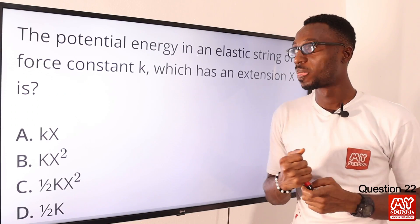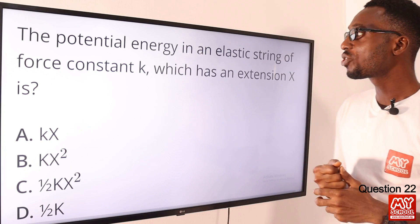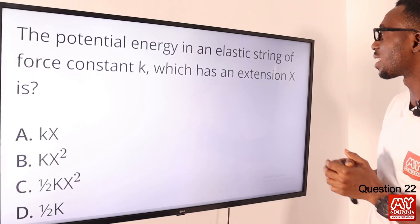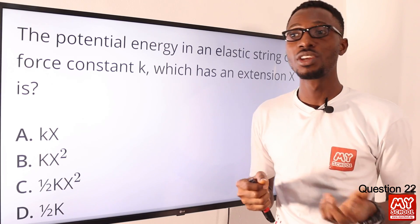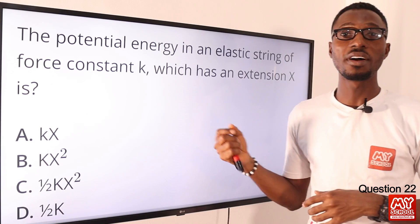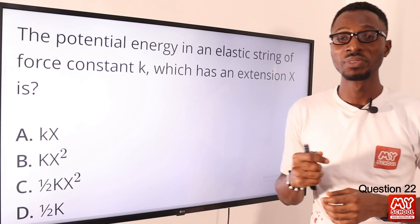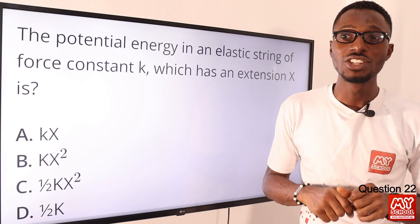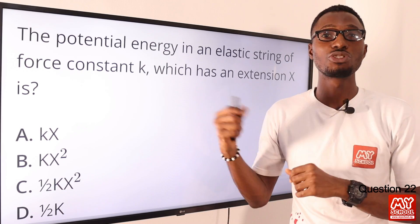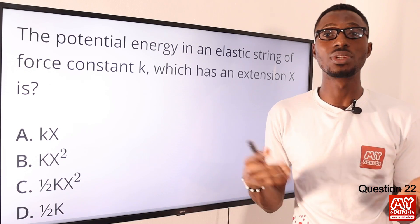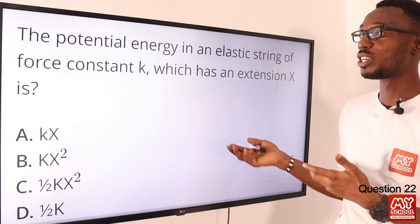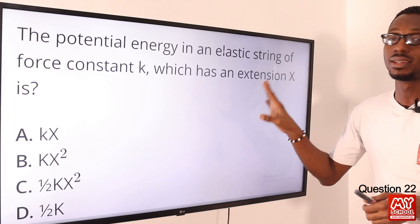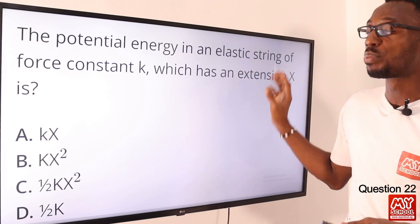Question 22. The potential energy in an elastic string of force constant K which has an extension S is what? If you recall Hooke's Law, you are looking at the concept whereby, provided that the elastic limit is not exceeded, the extension produced is directly proportional to the applied force — the relationship between the force applied F and the extension produced.